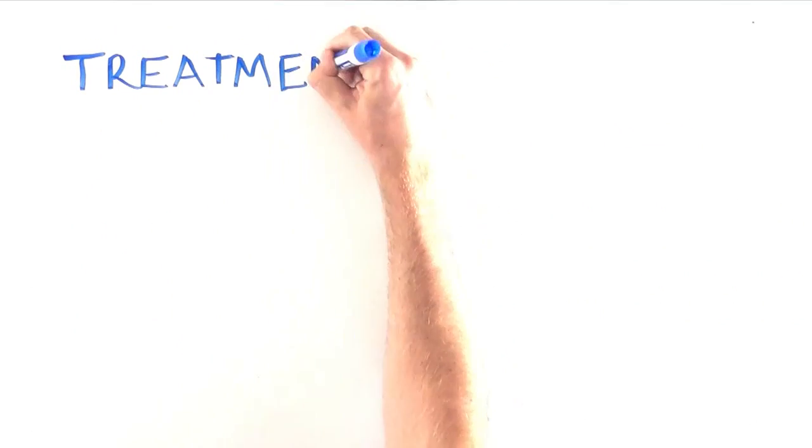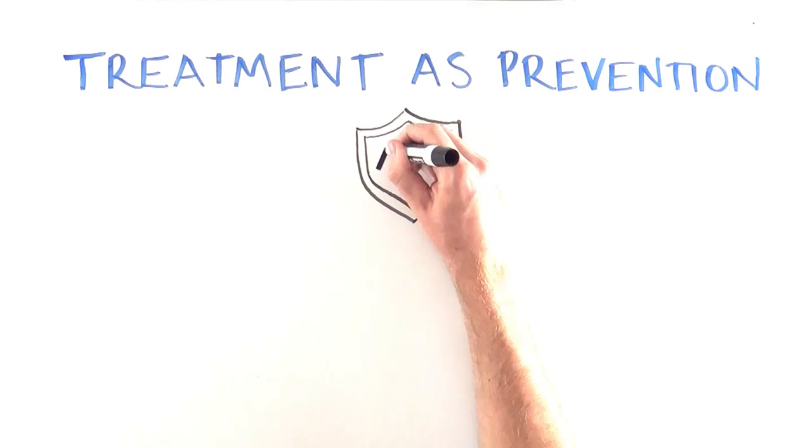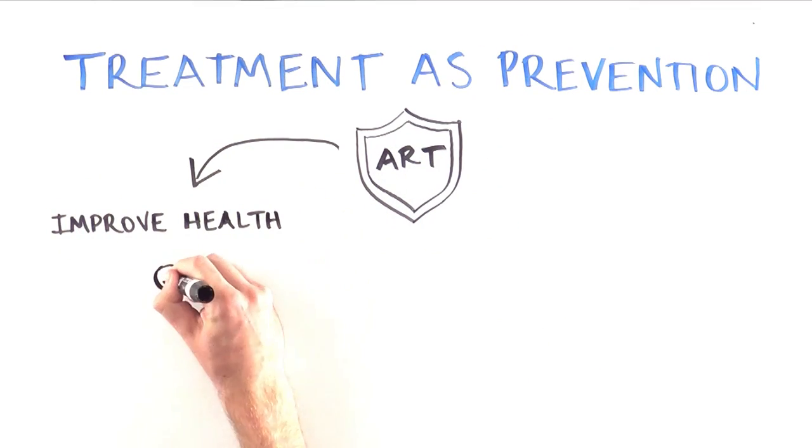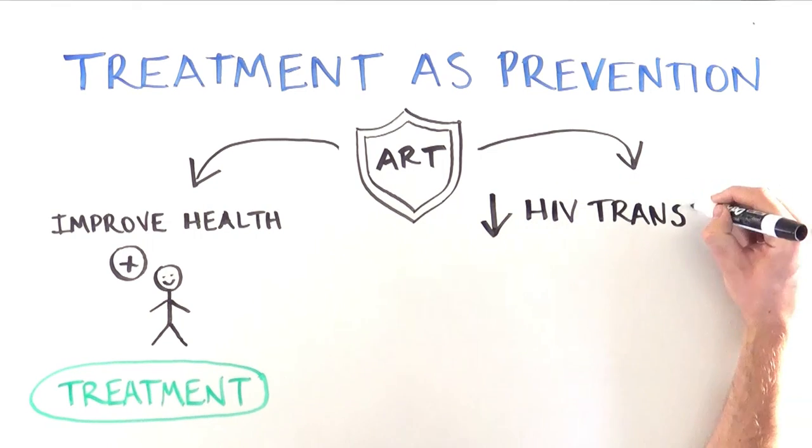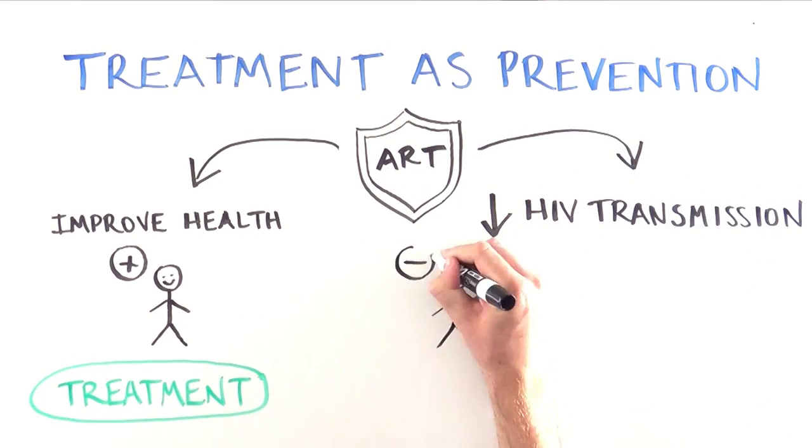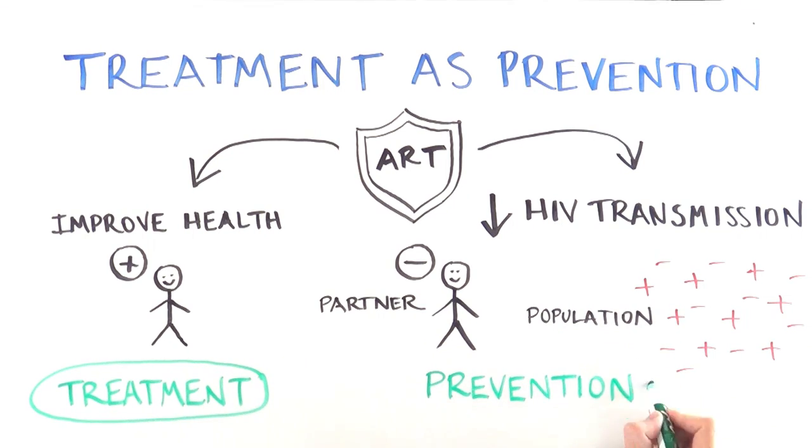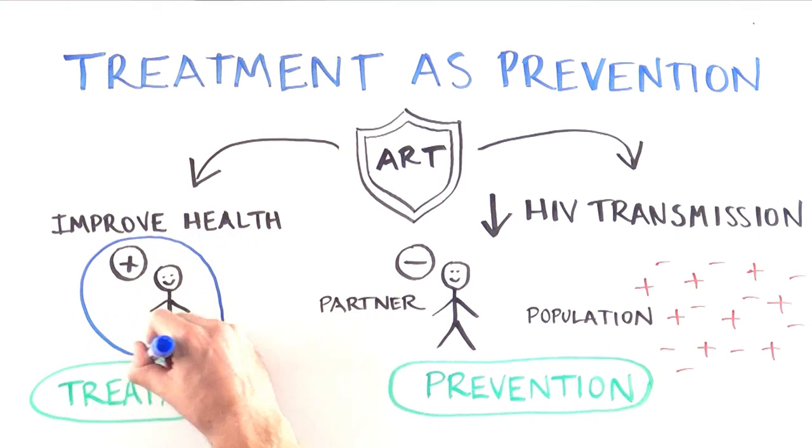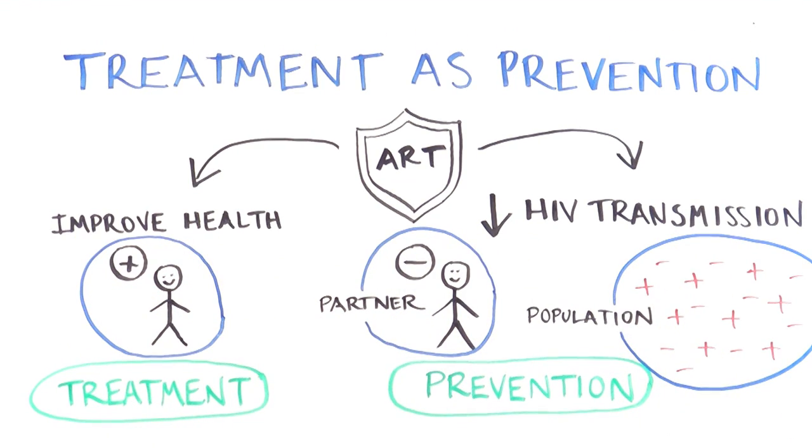This is called treatment as prevention, where people with HIV take antiretroviral therapy to improve their own health and to decrease the chance of HIV transmission to a partner, or on a larger scale, HIV transmission within a population. Multiple studies support this strategy for the health of both HIV positive and HIV negative partners and to reduce the number of new infections.